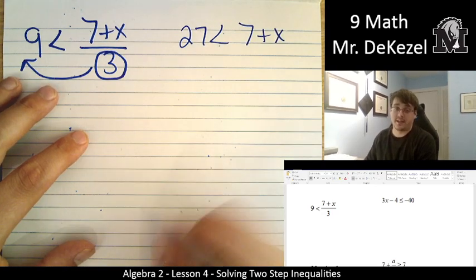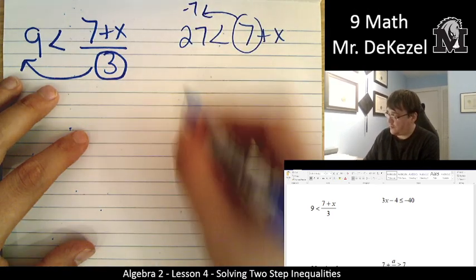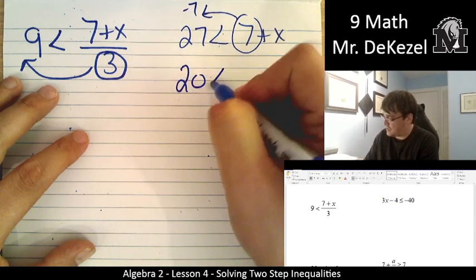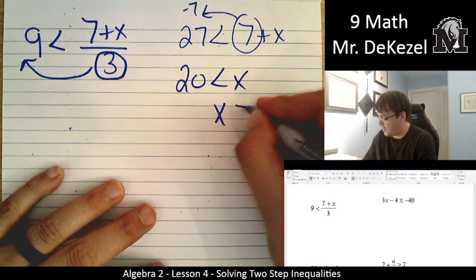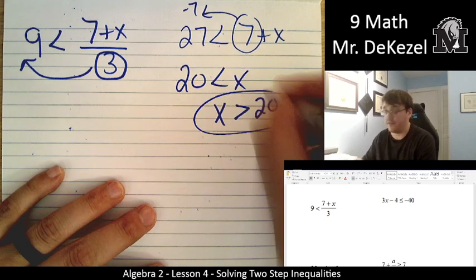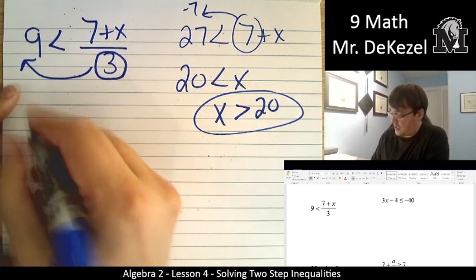We want to get x all by itself, so we take the 7 and we move it over to minus 7. 27 minus 7 is 20. It's less than x. And then we flip it around. x is greater than 20 for our final answer. If you have questions, pause the video and be like, hey, what are you talking about? And I'll be happy to answer them.